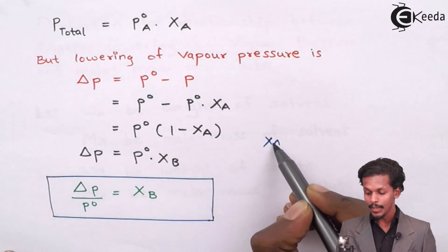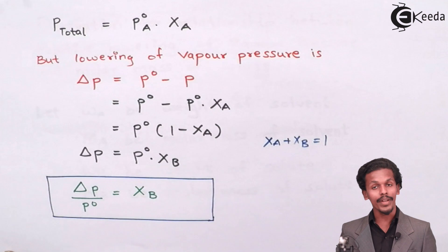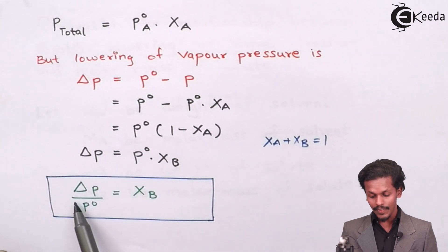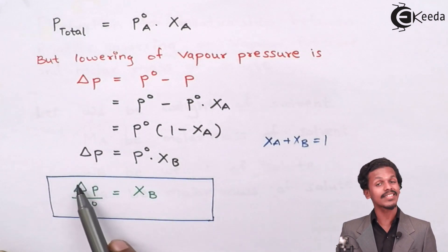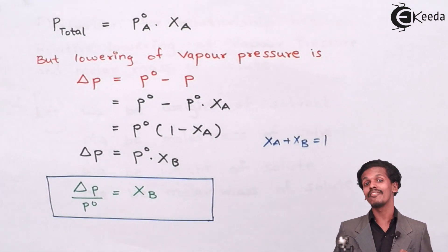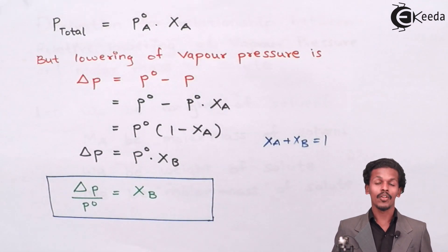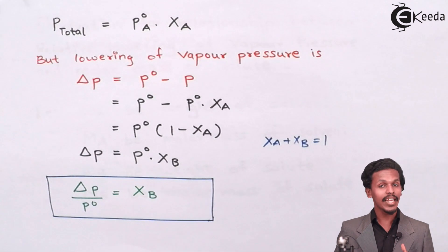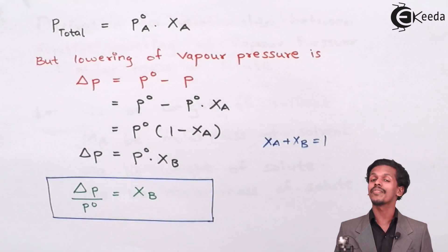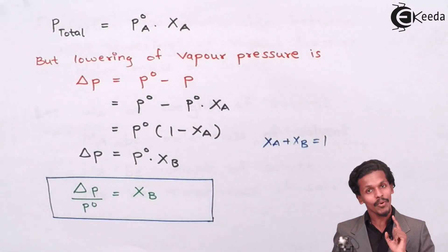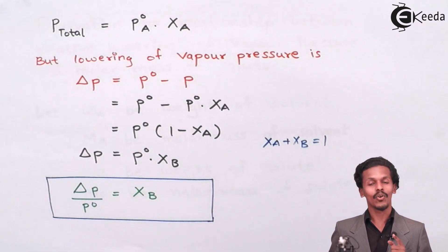Since XA plus XB equals 1, we have 1 minus XA equals XB. Therefore, delta P divided by P0 equals XB. This expression is the relative lowering of vapor pressure. We have shown that the relative lowering of vapor pressure is equal to XB, the mole fraction of the solute, and hence it is dependent on the number of solute particles. Therefore, it is a colligative property.